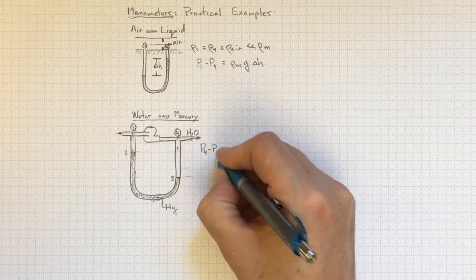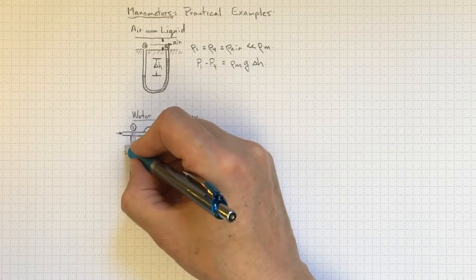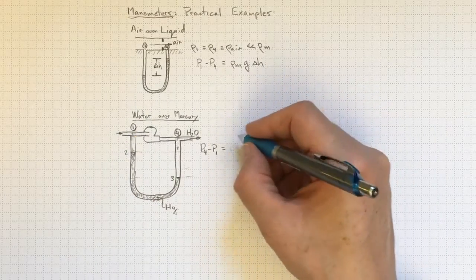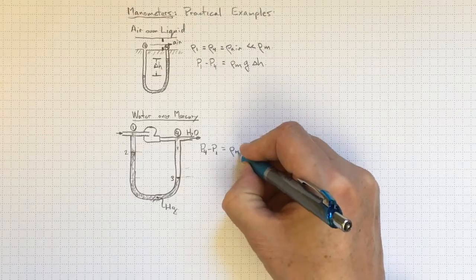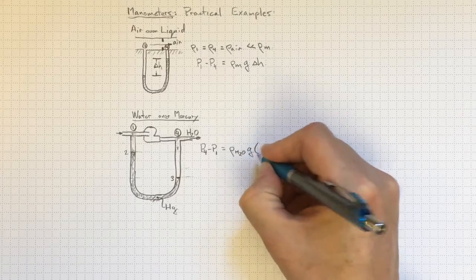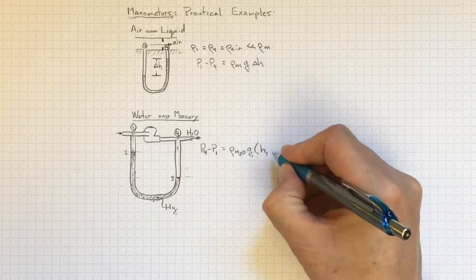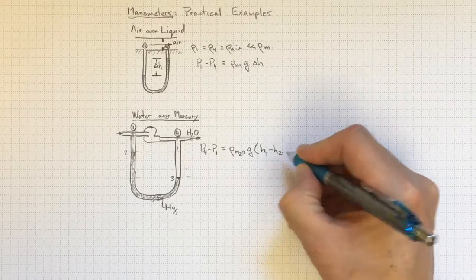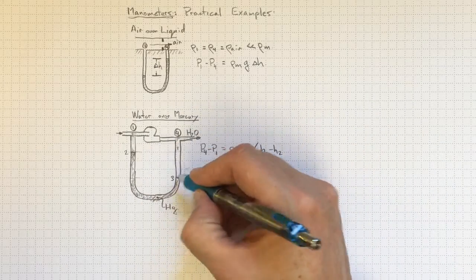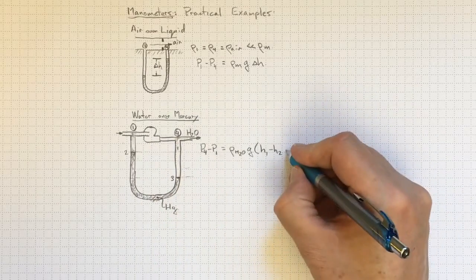So the pressure at 4 will be equal to the pressure at 1 plus this delta H from 1 to 2 times the density of the water times G. So that'll be H1 minus H2. And when we're collecting up the same one, we'll be looking at the difference between 3 and 4. So minus H4 minus H3.